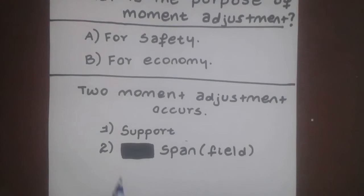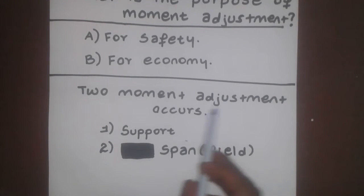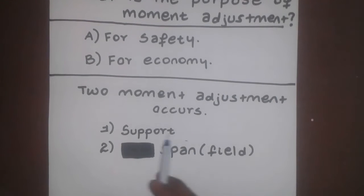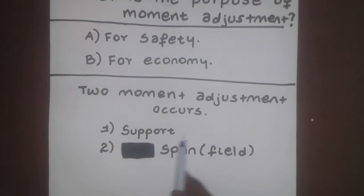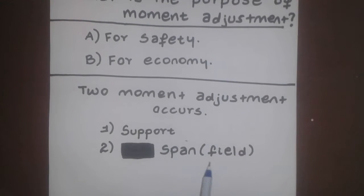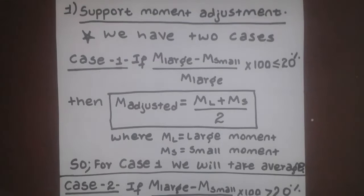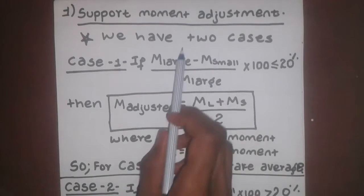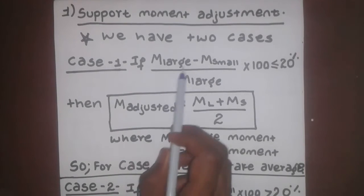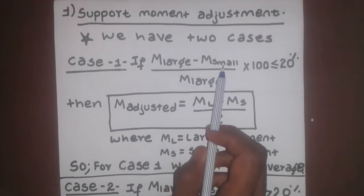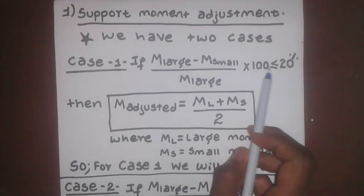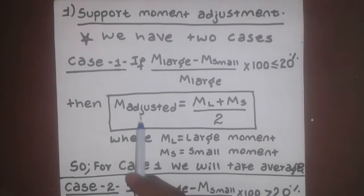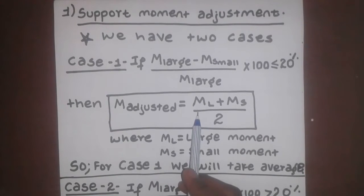The next step is the support moment — the span of a field. The first step is to adjust the span of a field. Support moment — we look at a range of values. So far, we can use it as a range.